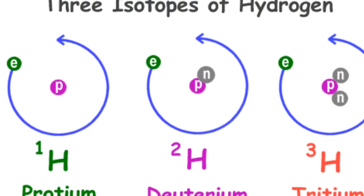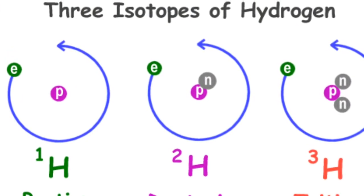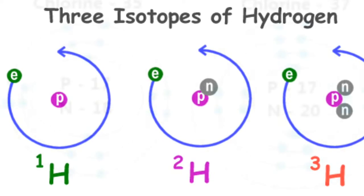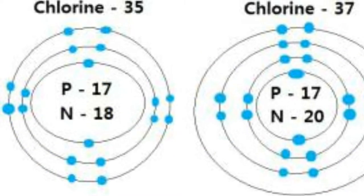An isotope is one of two or more atoms that have the same atomic number, the same number of protons and electrons, but a different number of neutrons.